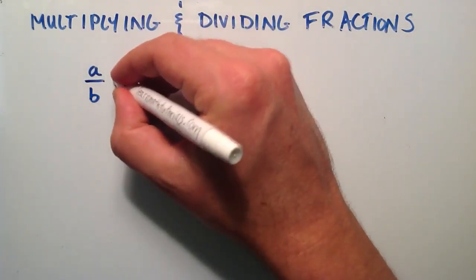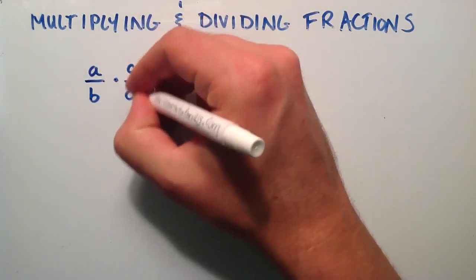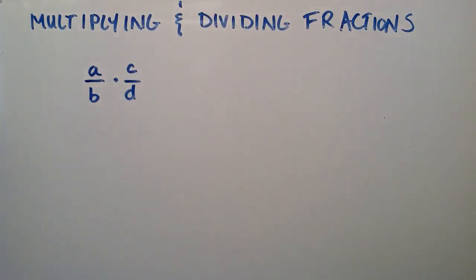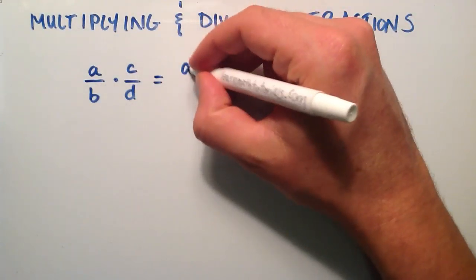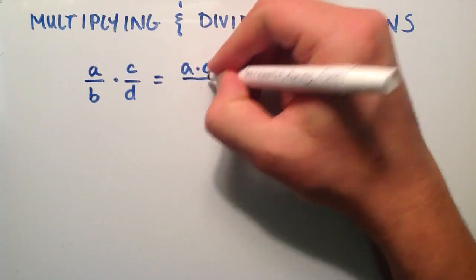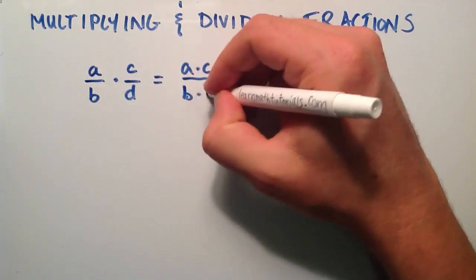A over B times C over D, one fraction multiplied by another fraction, is simply equal to the numerators multiplied by one another, divided by the denominators multiplied by one another.